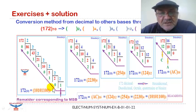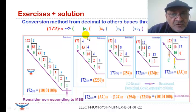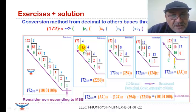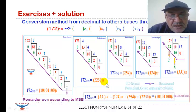For the base-4 (quaternary) conversion of 172: we divide by 4, which gives 43 with remainder 0 as the first coefficient. Then 43 divided by 4 gives 10 with remainder 3, and so on. The last remainder is 2. So 172 in base 10 is equivalent to 2230 in base 4. The same process applies for octal and duodecimal conversions.